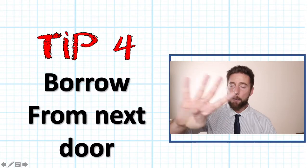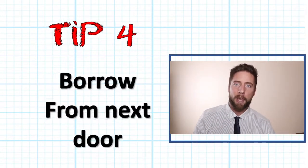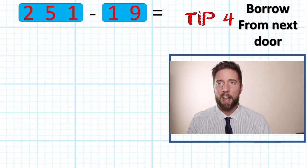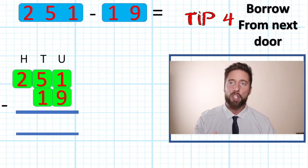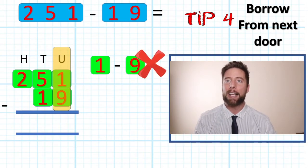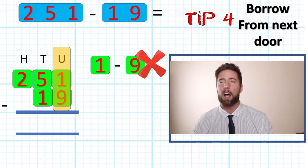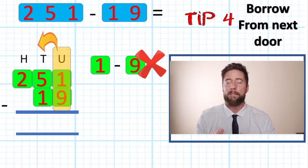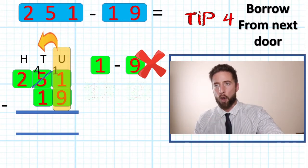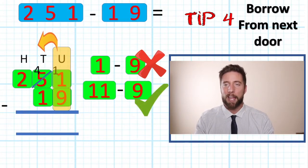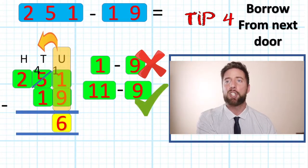Tip four: if we need to borrow, borrow from next door. If I have 251 subtract 19, I cannot take nine away from one. So my one has to get bigger. I'm going to knock next door and borrow from my tens column — borrow one of my five tens, put that down to a four and make my one an 11. 11 subtract nine is doable. Tip number four: borrow from next door.